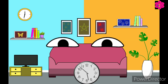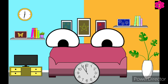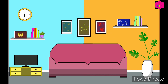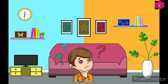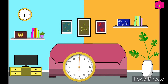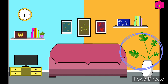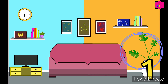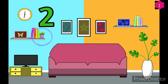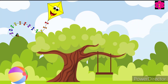Can you find the living things in this room? There are two living things in this picture. The first is this plant, and the second is this one. Okay kids, now see this picture.